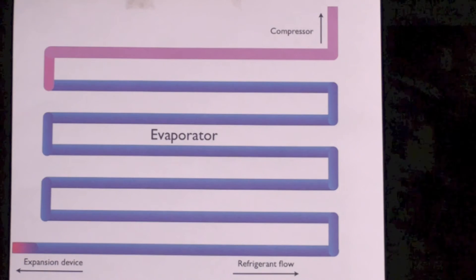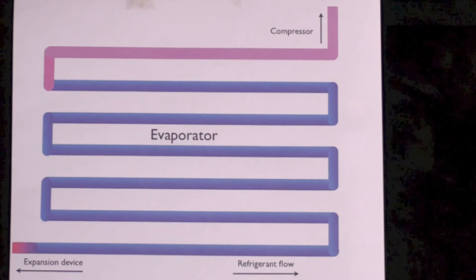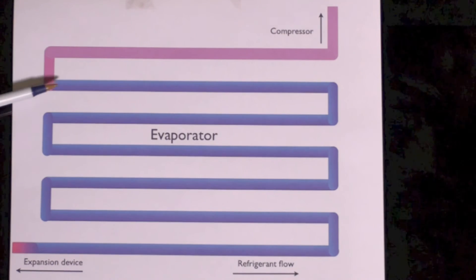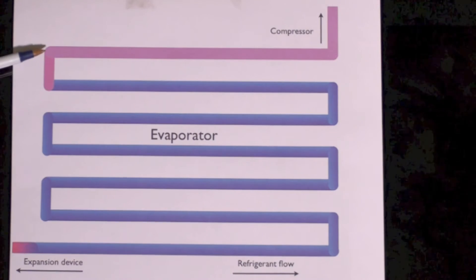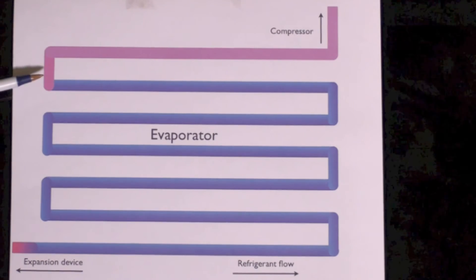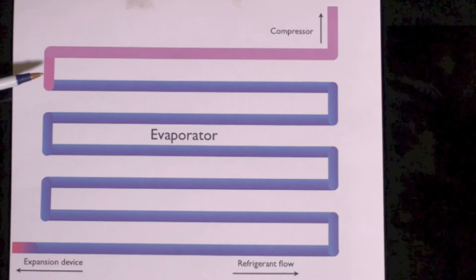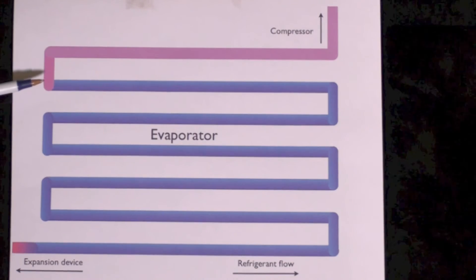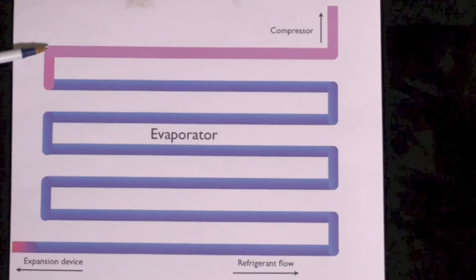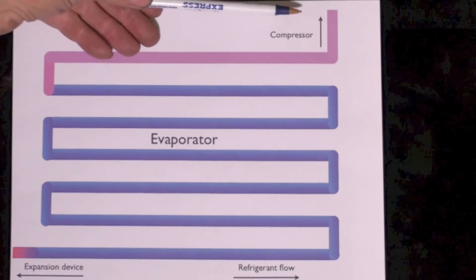Out towards the end of the evaporator, you see the color difference here. We have run out of liquid. There's no more liquid left, and we have gas going up to the compressor.